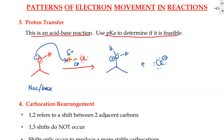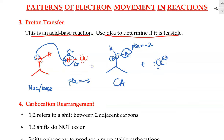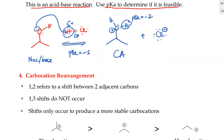This step would only be feasible if we use pKa to determine it will happen. The pKa of HCl is negative 7, and the pKa of the conjugate acid is about negative 2. An acid-base reaction is favored to the side with the higher pKa, so since negative 2 is higher than negative 7, this reaction will be favorable. We also want to make sure to use a reversible arrow, since acid-base reactions are all reversible.